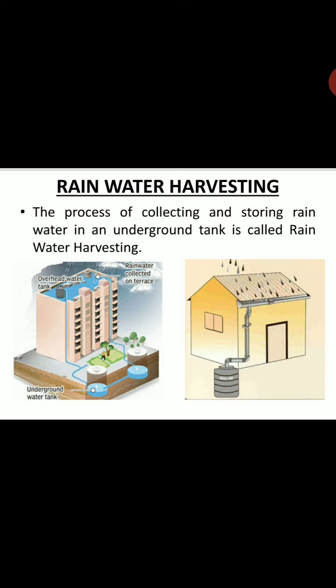Now rainwater harvesting — ab dekhte hain rainwater harvesting kya hota hai. The process of collecting and storing rainwater in an underground tank is called rainwater harvesting. Yahan pe do pictures diye gaye hain. Dono pictures mein rainwater harvesting ka process dikhaya gaya hai — flat roof aur slanting roof se rainwater harvesting kiya jata hai.